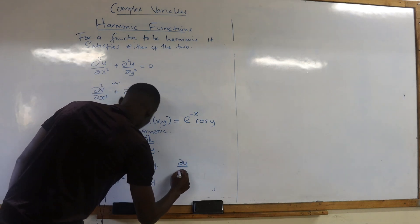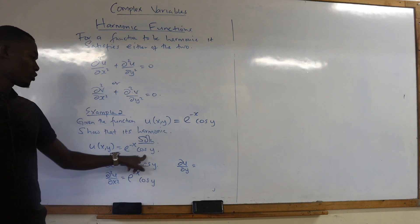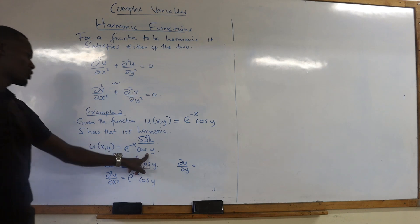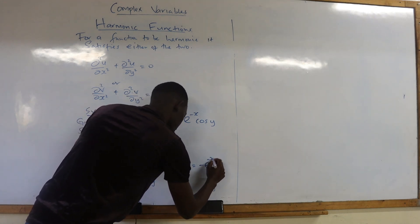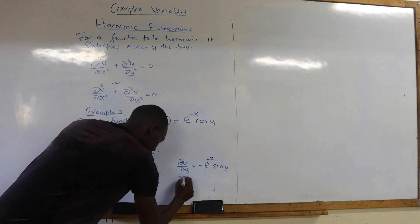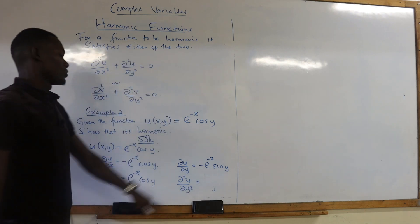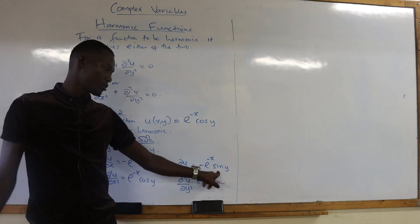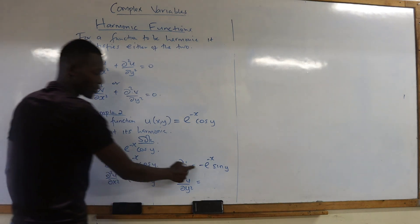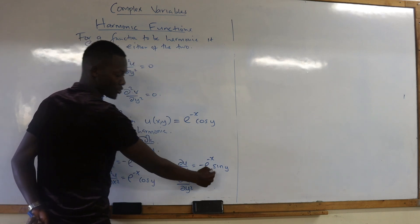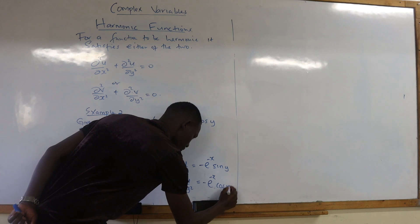Now du/dy — differentiate the function of y alone, treating the exponential as a constant. When you differentiate cos, you get negative sin. So du/dy = negative e^(−x) sin(y). Then d²u/dy²: differentiate sin the second time. When you differentiate sin, you get positive cos. So our negative remains, giving us negative e^(−x) cosine of y.